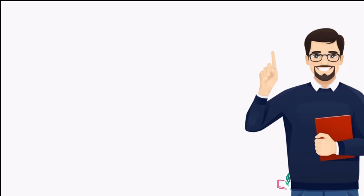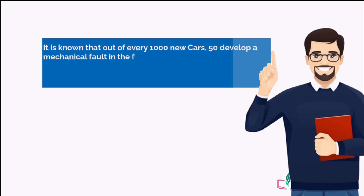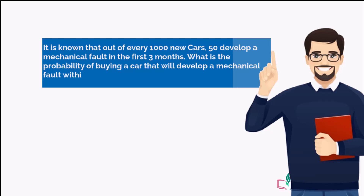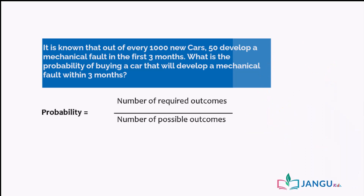Let's try another example. It is known that out of every 100 new cars, 50 develop a mechanical fault in the first three months. What is the probability of buying a car that will develop a mechanical fault within three months? Since probability is the number of required outcomes over the number of possible outcomes, the probability of buying a faulty car is 50 over 100, and that can be simplified to 1 over 2.